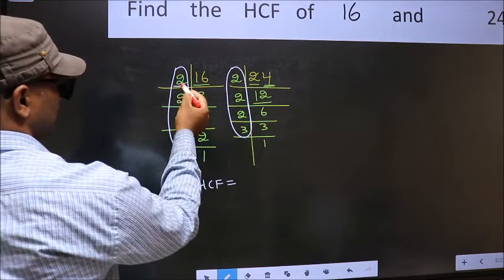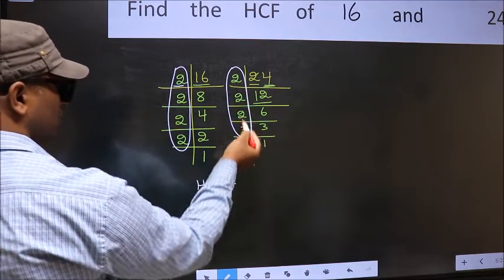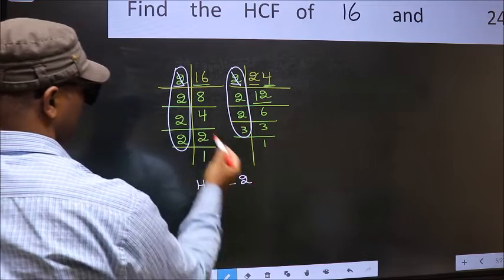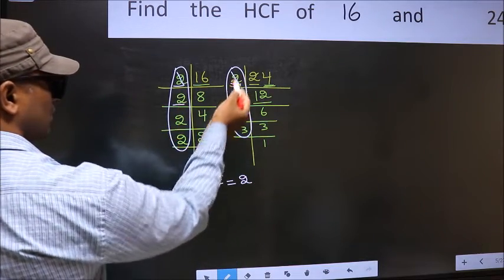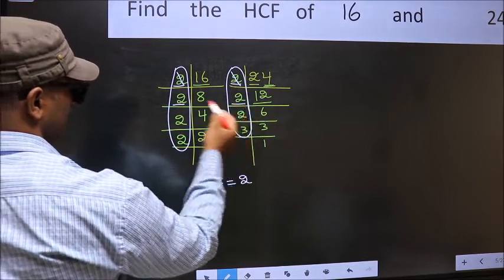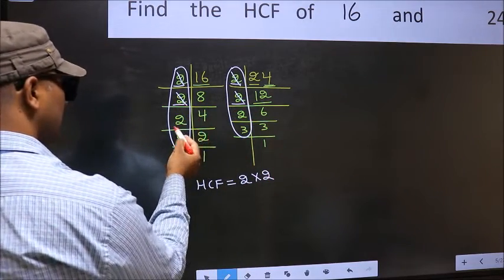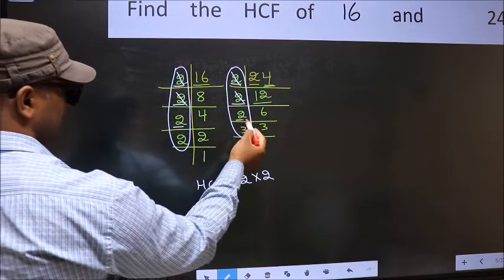So now let us find the numbers which should be present here and here. Starting with the number 2. Do we have 2 here? Yes. So cut 2 right here. Next number 2. Do we have 2 here? Yes. So cut 2 right here. Next number 2. Do we have 2 here? No.